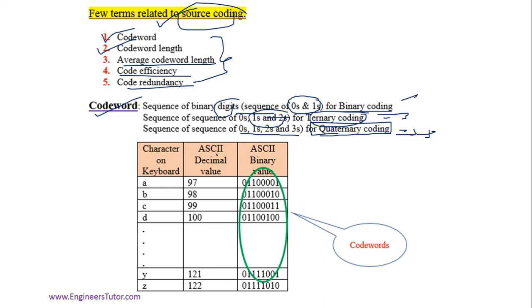This is ASCII, American Standard Code for Information Interchange. The letter 'a' is represented by decimal value 97. When we convert to binary, we get the codeword. These codewords represent the symbols of the keyboard.